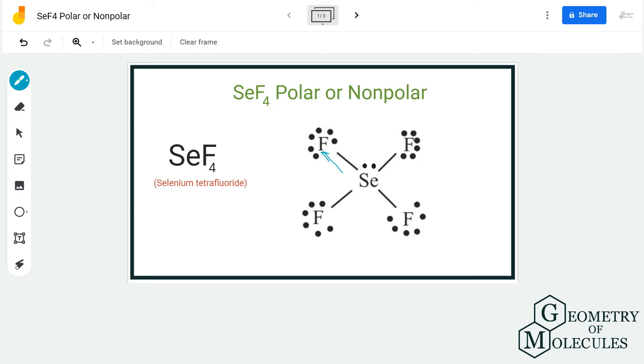So basically fluorine will try to pull the shared electrons towards itself. Hence, there will be a dipole moment which will be towards the fluorine atoms. Now this will be common for all the fluorine atoms in this molecule.